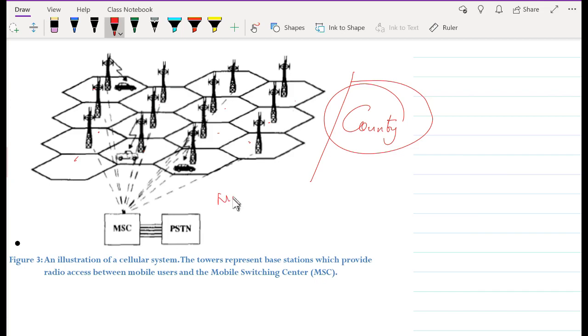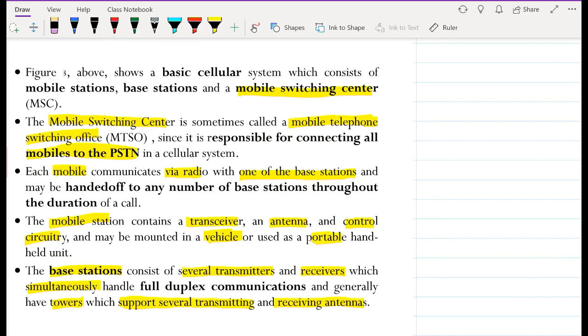From figure three above, a basic cellular system consists of a mobile station, a base station, and a mobile switching center. Each of those three must be there for communication to happen. A base station cannot process the calls that it receives. The task of managing the calls, managing the billing, interconnecting the base stations is performed by mobile switching center. The mobile switching center is sometimes called mobile telephone switching office because it is responsible for connecting all mobiles to the PSTN.